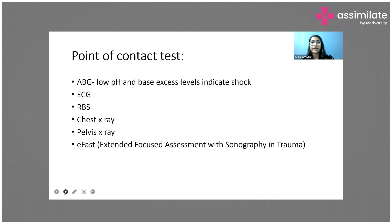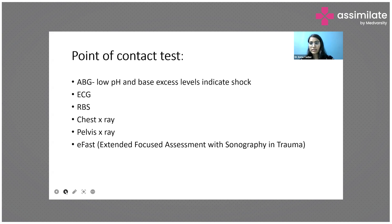Going ahead with ABCDE, if we find anything on the breathing part or abdomen on exposure, we can order point-of-care tests and proceed with a FAST scan. On ABG, we check the pH and base excess of the patient — these are two early indicators of shock, even before blood pressure drops or tachycardia appears. Low pH and low base excess levels indicate the patient is going into shock.